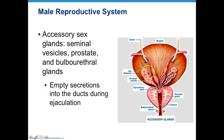All of these are grouped as accessory sex glands because they are emptying secretions. The composition of that fluid will vary depending on which gland it is coming from. They flow through ducts in each of these glands and into the urethra, ending up in the ejaculation substance, which is semen.